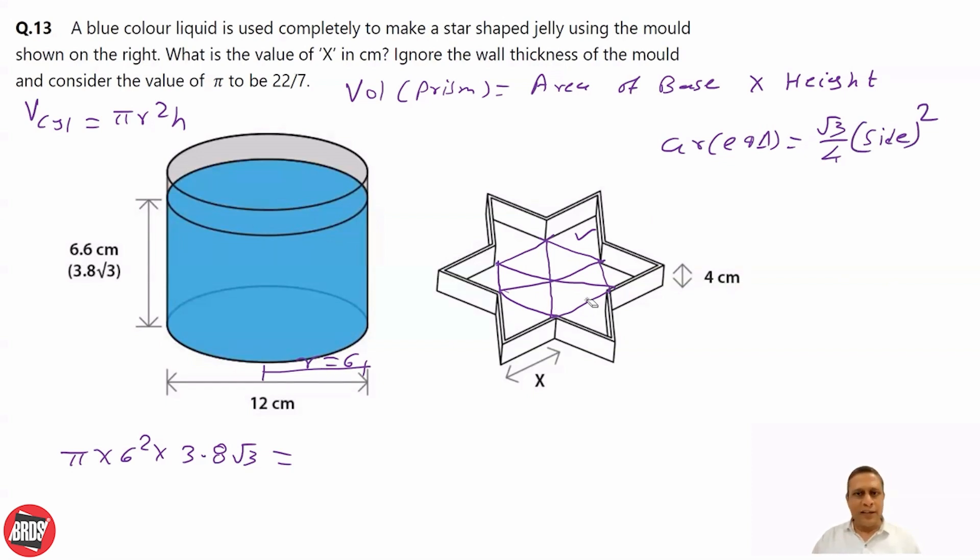So, how many equilateral triangles are there? This is 12 times root 3 by 4 side. What is side? X. X square. So this is area of base. And what is height? Height is 4. So you multiply it by 4. Okay?